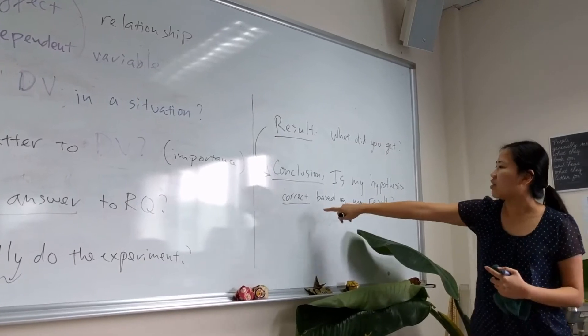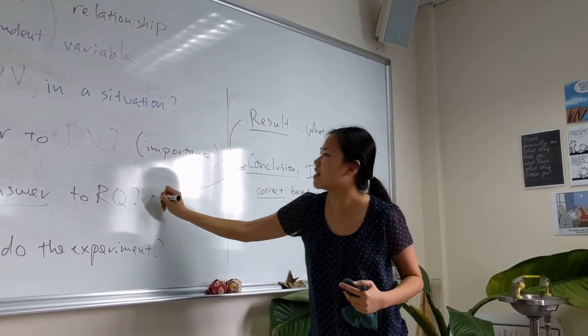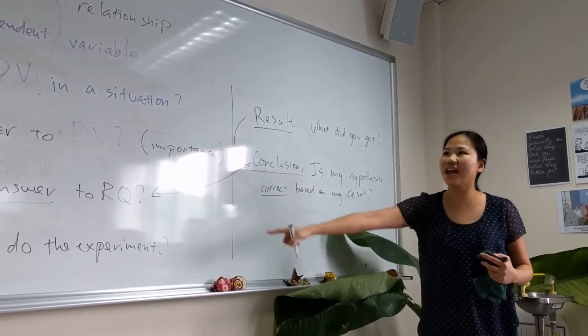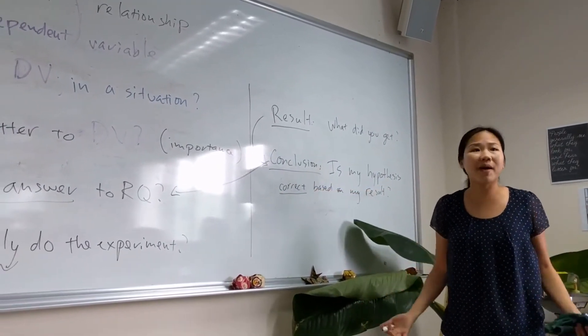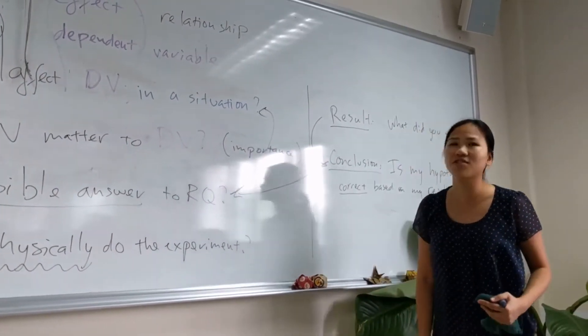So in the conclusion you have to mention your result. Once you say okay, if my hypothesis is correct, so then your conclusion will have to mention the hypothesis. And say yeah, my hypothesis is correct. If my hypothesis is correct then yes, you already have answered your research question.